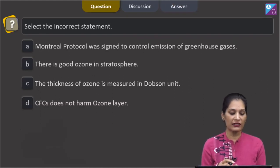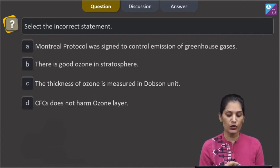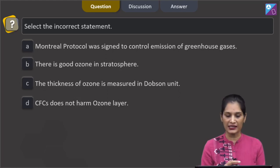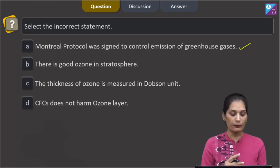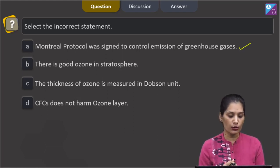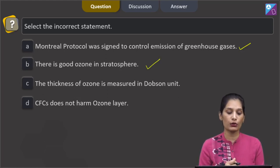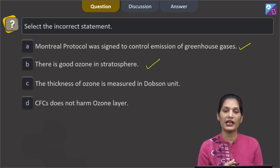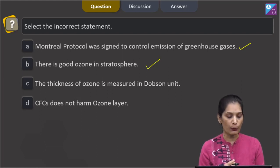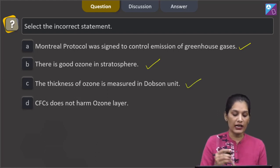This question says select the incorrect statement. A, Montreal protocol was signed to control emission of greenhouse gases. This is true. B, there is good ozone in stratosphere. This is also true that good ozone lies in stratosphere whereas bad ozone lies in troposphere.